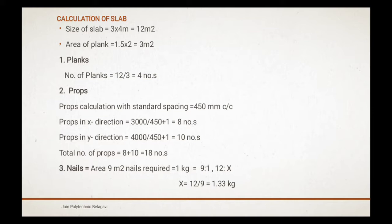Nails: area 9 m² nails required = 1 kg. So 9.1, 1.2, X. X = 12/9 = 1.33 kg.